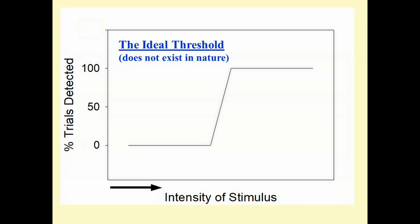Each intensity of the sound would be presented multiple times so I could graph the results. On the vertical axis would be the percentage of trials in which a sound of a particular intensity was detected. On the horizontal axis would be intensity of the stimulus, increasing as you move toward the right.